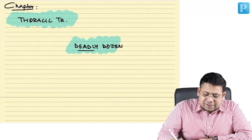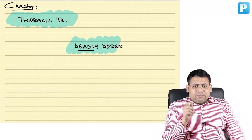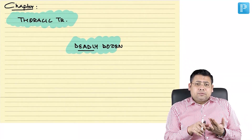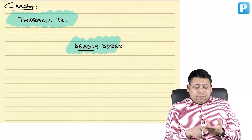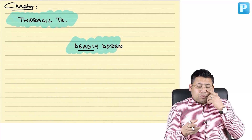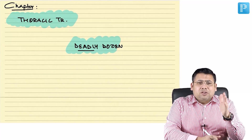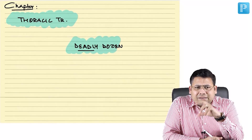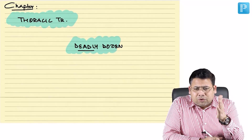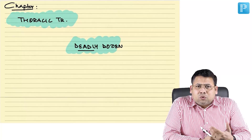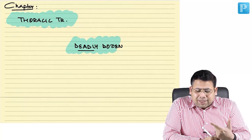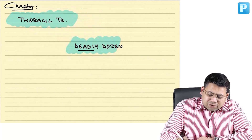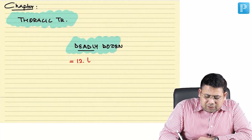Deadly Dozen is a term taken from Bailey and Love, or you can say it's a term taken from Pushi, from Churchill. You will not get this term 'Deadly Dozen' in books like Sabiston, Schwartz, or Mango — not even in ATLS — because of the different school of thought. By definition, Deadly Dozen means 12 life-threatening conditions.